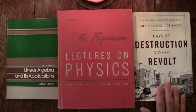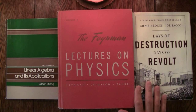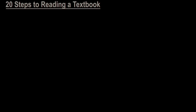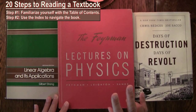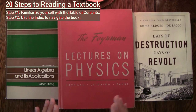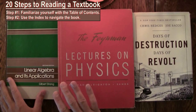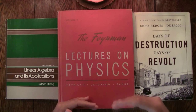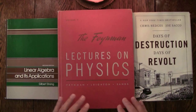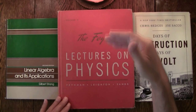What we're going to do in this video is take a look at how to read a textbook. What you have to keep in mind is two things about textbooks — the two most important parts — and those happen to be the table of contents and the index.